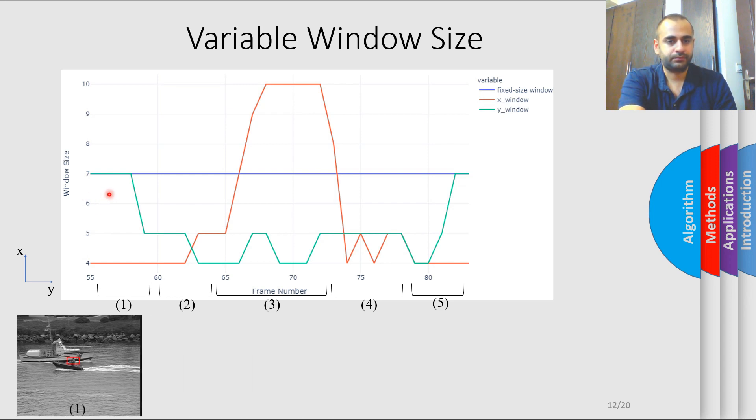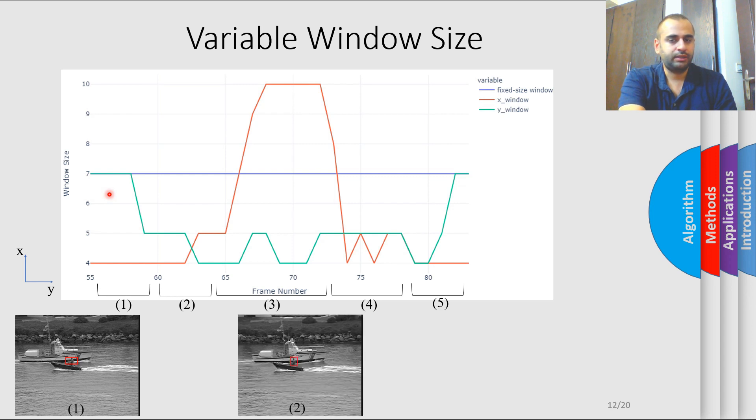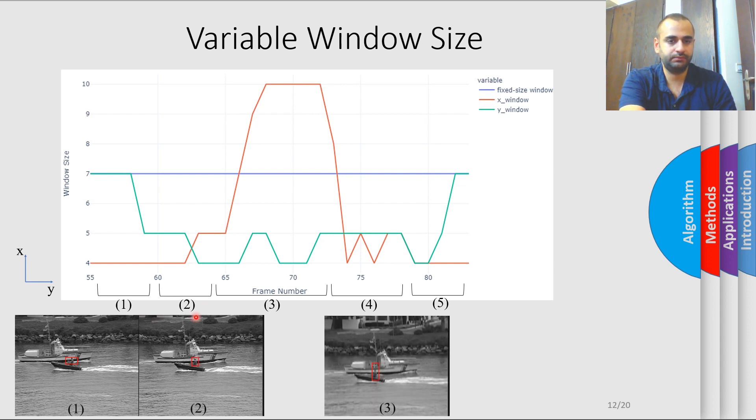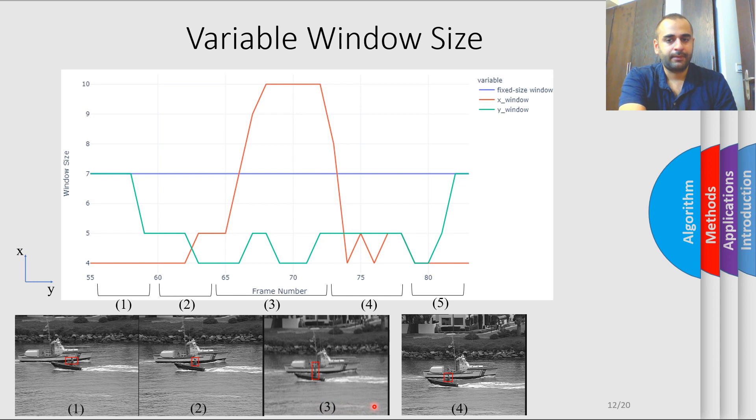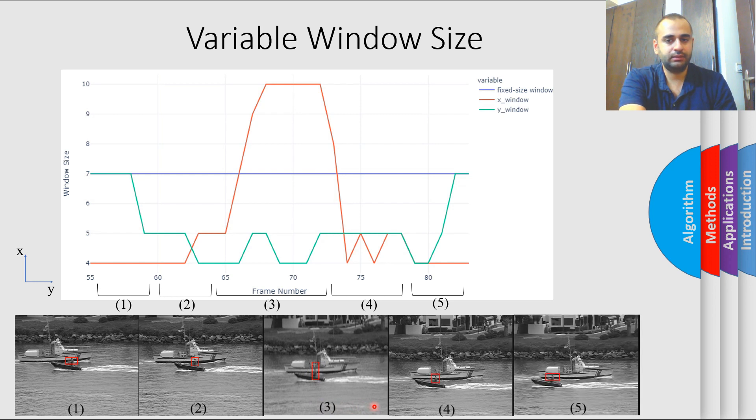Region 2 has no clear dominant motion direction. Therefore, we utilize a symmetrical window. Region 3 brings a sudden shift to vertical motion, so we increase the window size in that direction, which is the red line. And then we have another symmetrical window for region 4. And then we see a horizontal dominant motion in region 5, so we enlarge our window in that direction.